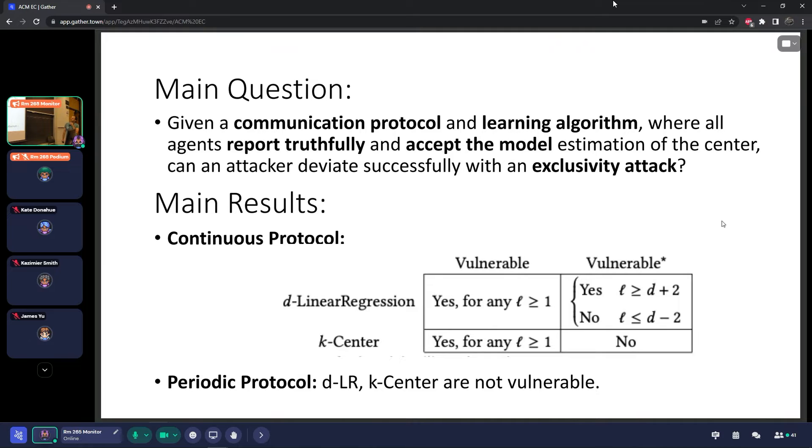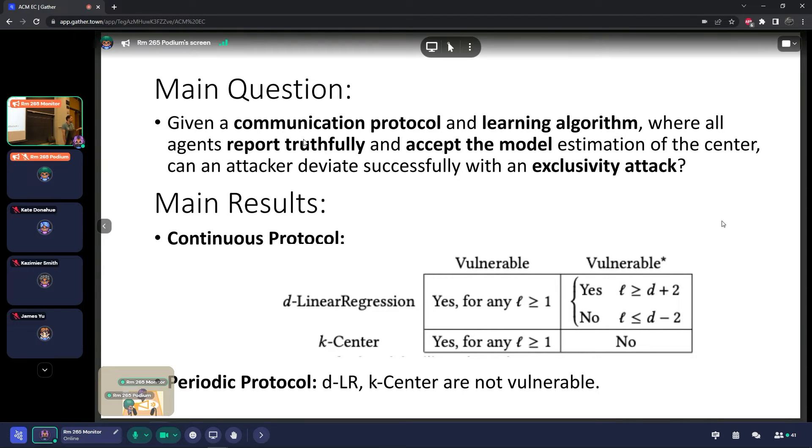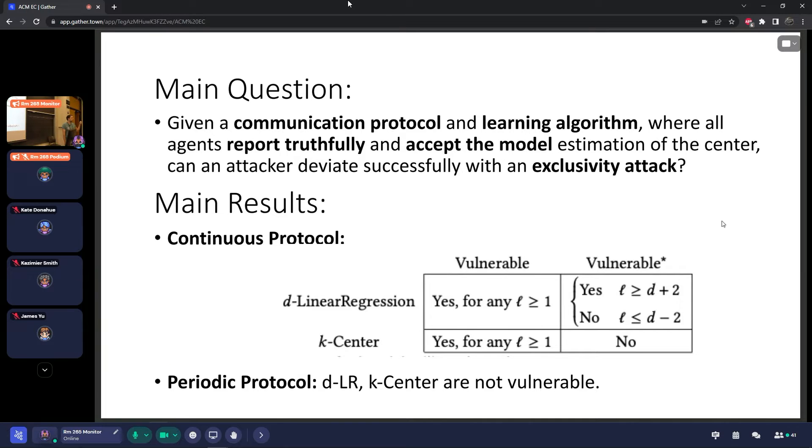Can an attacker deviate with an exclusivity attack? And what we find, we examine a few protocols, but here two are shown. And we basically see that under one protocol that we present, that we call the continuous protocol, there is basically vulnerability and even some kind of strong vulnerability. But actually, for a different protocol that we define, the periodic protocol, these algorithms are not vulnerable. So actually, a main, a very important takeaway from the paper is that the decision over which communication protocol is facilitated to communicate is very important for the vulnerability here.